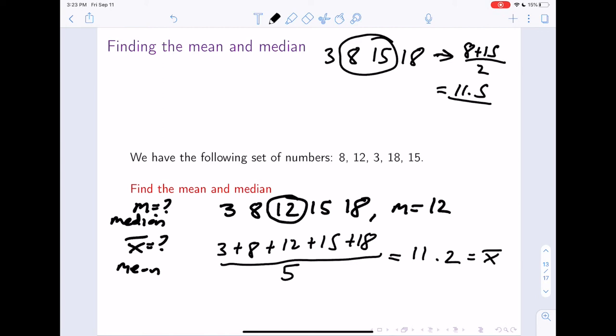One more thing to think about is what happens if instead of having the number 15, what if we had the number 100? Let me use these numbers down here: 3, 8, 12, 18, 100. Does the median change? No. The median is still just 12. But does the mean change?